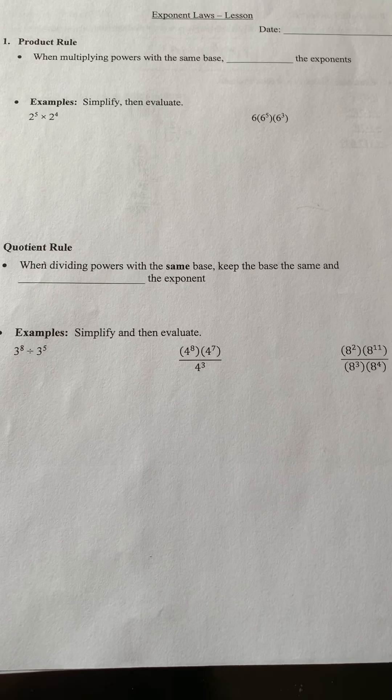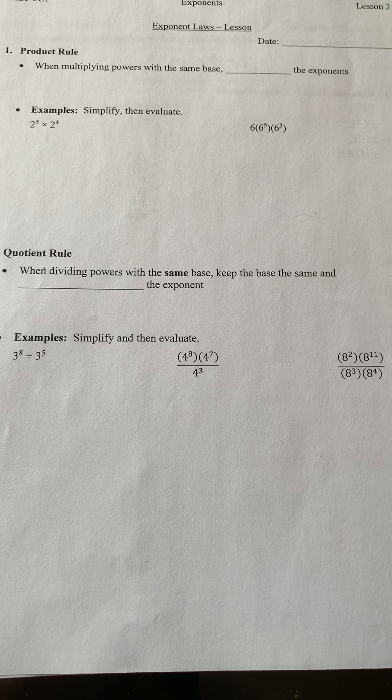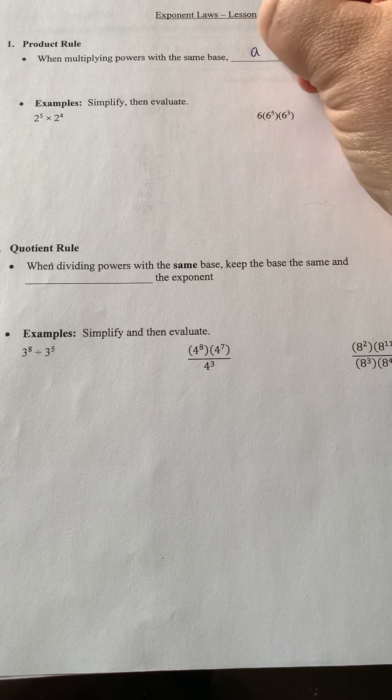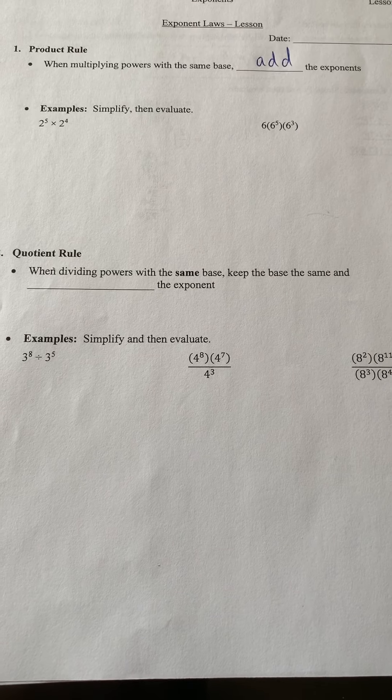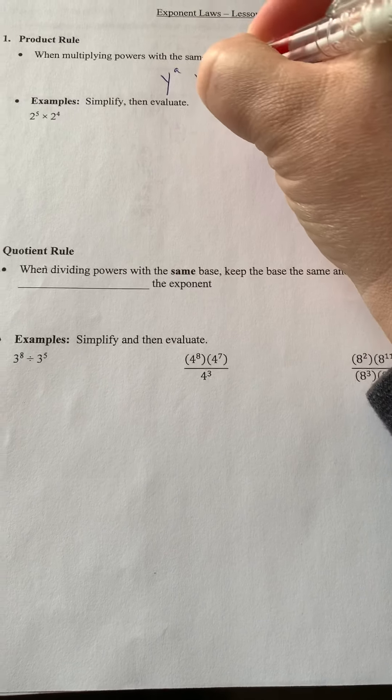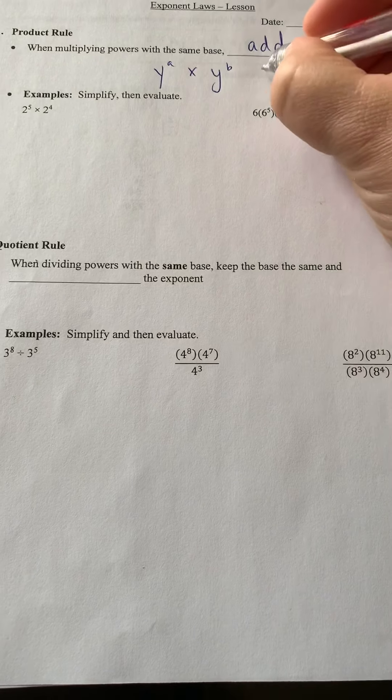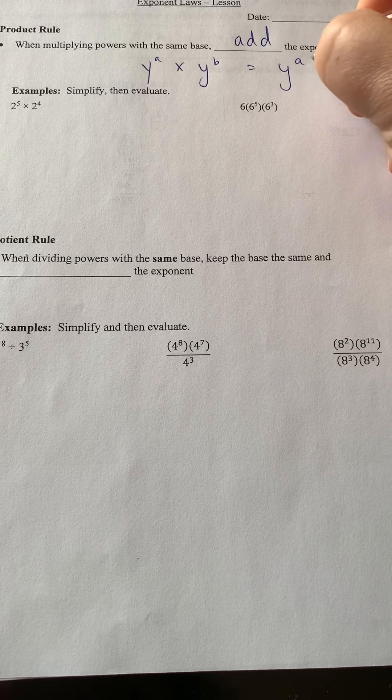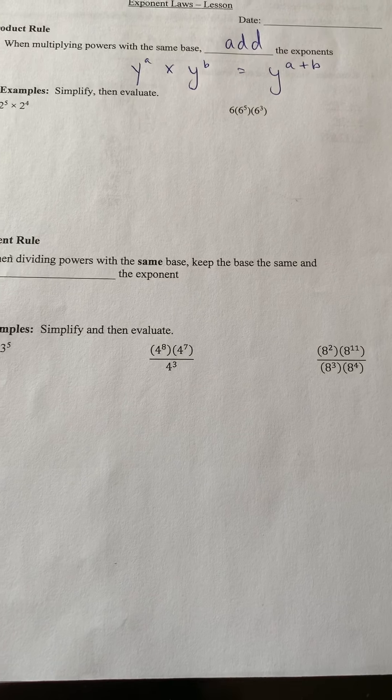So the product rule. When multiplying powers with the same base, we add the exponents. So y to the power of a times y to the power of b, we leave the base the same and we add those exponents.